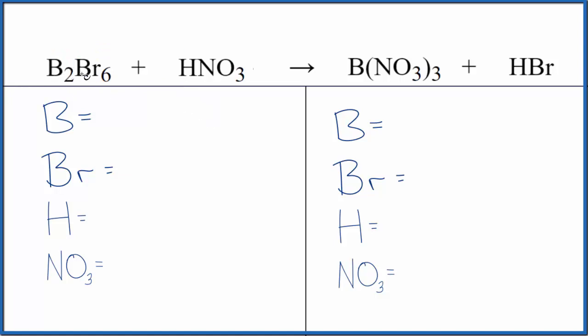Let's balance the equation. Two boron, six bromine, we have one hydrogen, and we're going to use a bit of a trick here. We have this nitrate group, NO3, we have it here again.